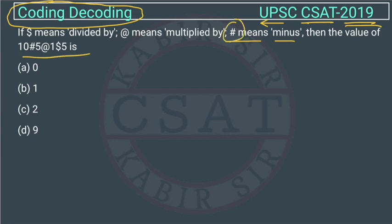So this is hashtag. We will convert it into: 10 hashtag is minus, then 5 at the rate sign means multiplied by, 1 dollar sign means divided by 5. So this is the question we have to solve.